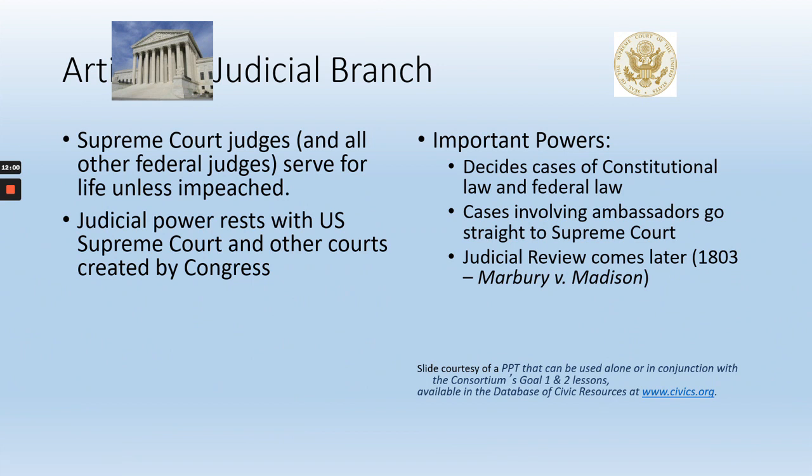Now the judicial branch — this is Article 3 of the Constitution. Out of the first three articles, it's by far the shortest. In a nutshell, all it says is that Congress will create the Supreme Court and other courts. It doesn't actually give any requirements for what it takes to be a judge. It just sets out that judges serve for life unless impeached. So if you get appointed to a federal court as a judge — whether it's a district court, an intermediate appellate court, or the Supreme Court — you get to serve for life.